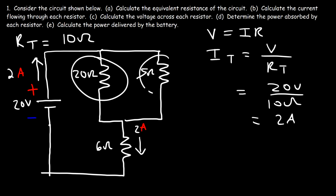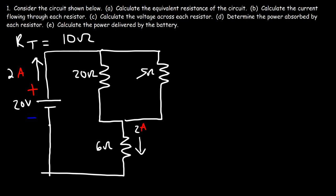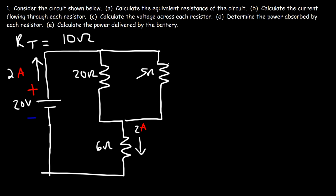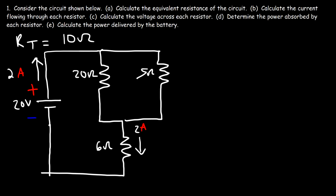The total current that flows through the two parallel resistors has to be 2 amps. Will there be more current flowing through the 5 ohm resistor or the 20 ohm resistor? If you decrease the resistance the current will increase, so more current flows through the 5 ohm resistor. Since 20 is 4 times the value of 5, the current through the 5 ohm resistor should be 4 times as great as through the 20 ohm resistor.